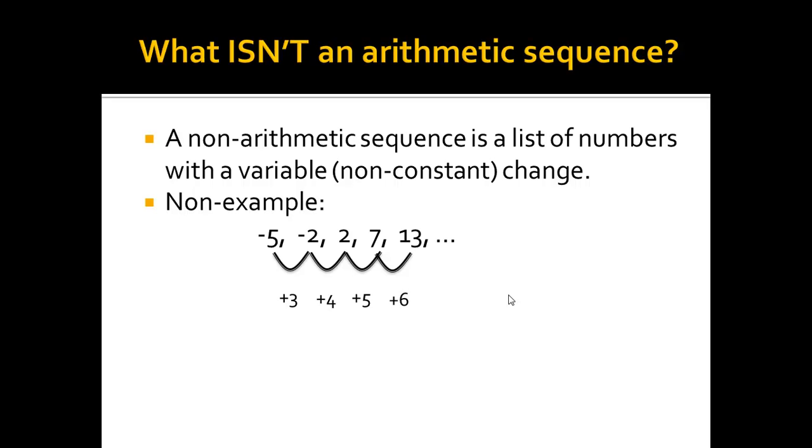Now, if I wanted to get to the next term, I would obviously have to add seven, which would mean the next term would be twenty. There is a pattern here, and I am adding each time. But this is always changing, so it's not constant.